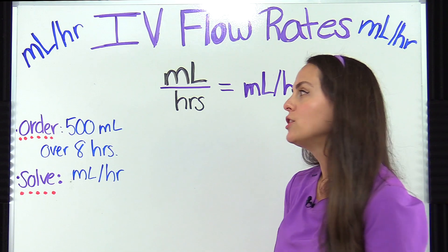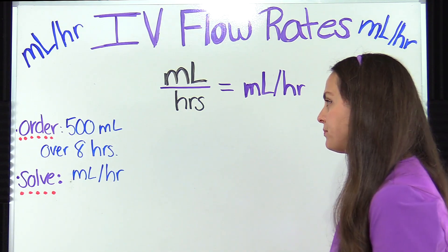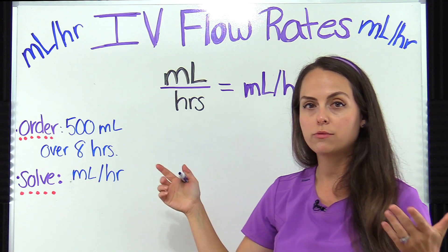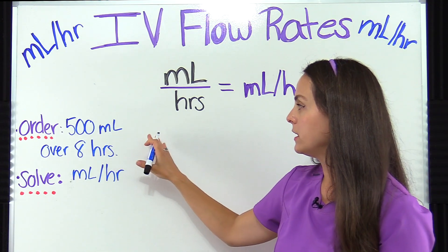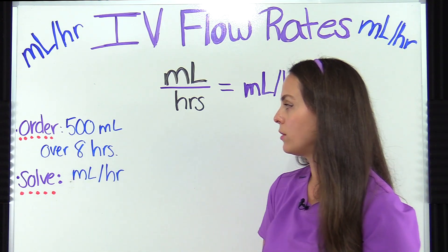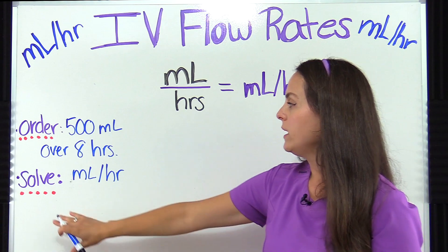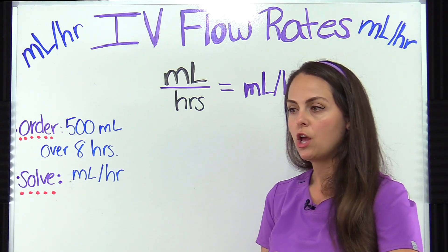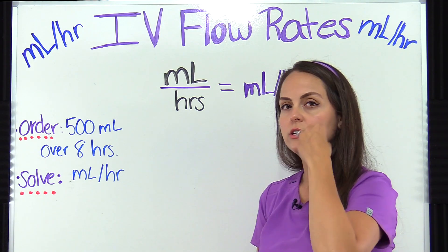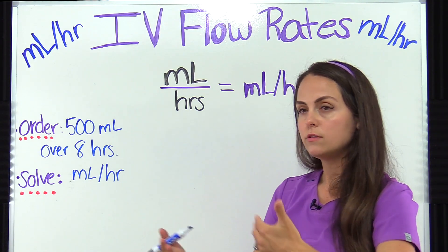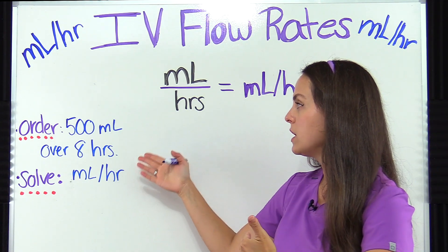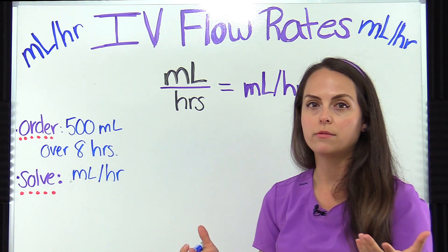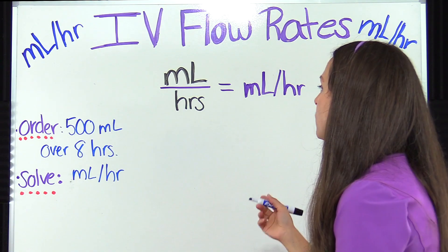Let's take a look at this problem. Our order says that the physician wants the patient to receive 500 milliliters over eight hours. We need to solve for how many milliliters per hour the patient should be receiving — how many milliliters per hour in order to equal a total volume of 500 milliliters? Let's plug it into our formula.